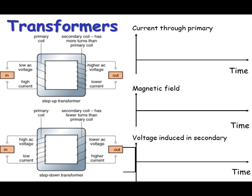The difference is the number of turns on the primary and secondary. So a transformer is made of a primary coil, the first coil, and a secondary coil, the second coil.